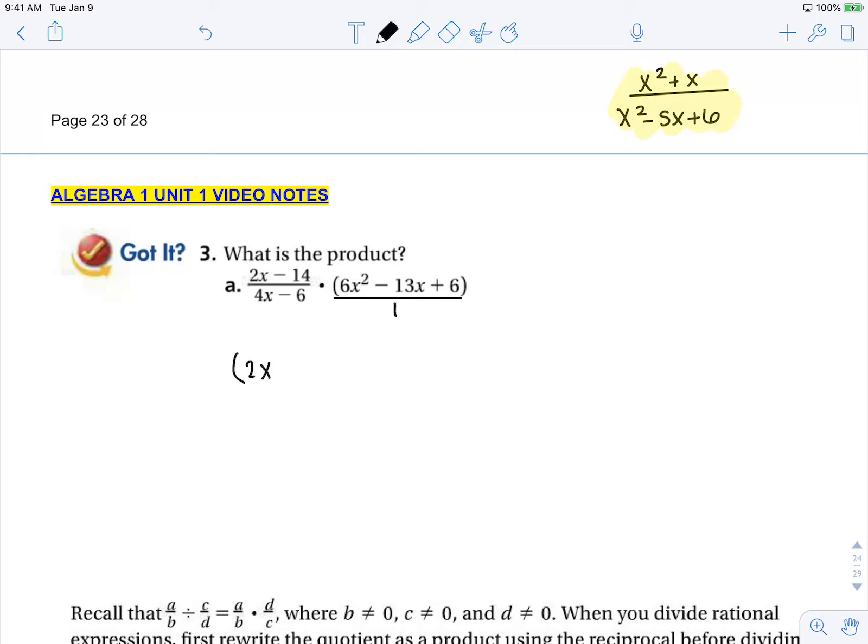we have 2x minus 14 times 6x squared minus 13x plus 6 over 4x minus 6.